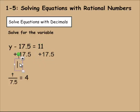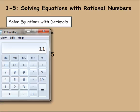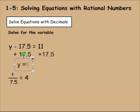So we would be just left with y minus 0, or we could just leave y there. And then that equals 11 plus 17.5. That would give you 28.5. So that would be our answer for that.